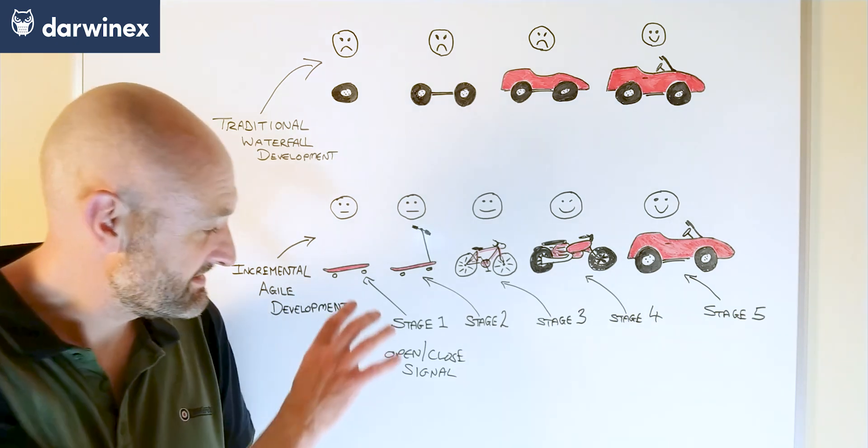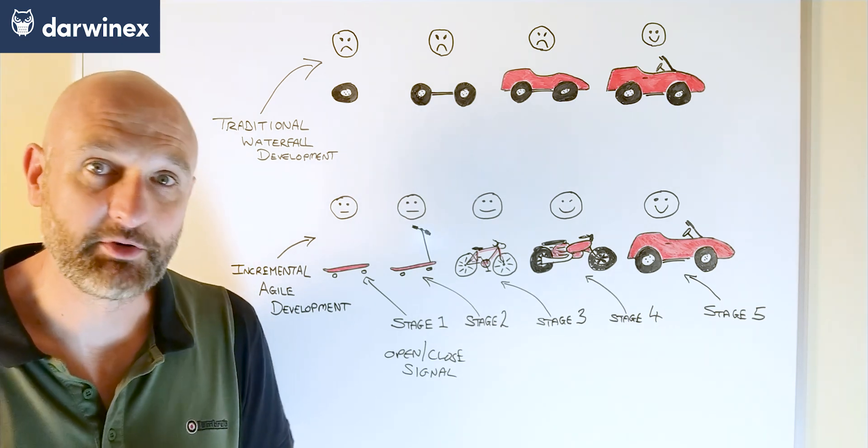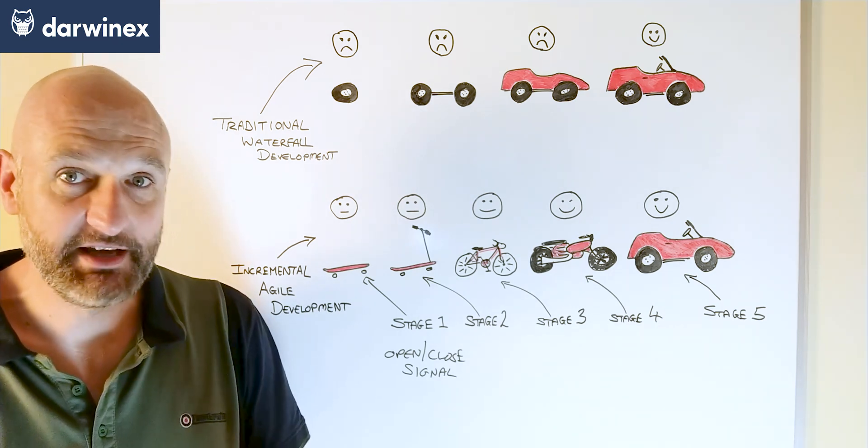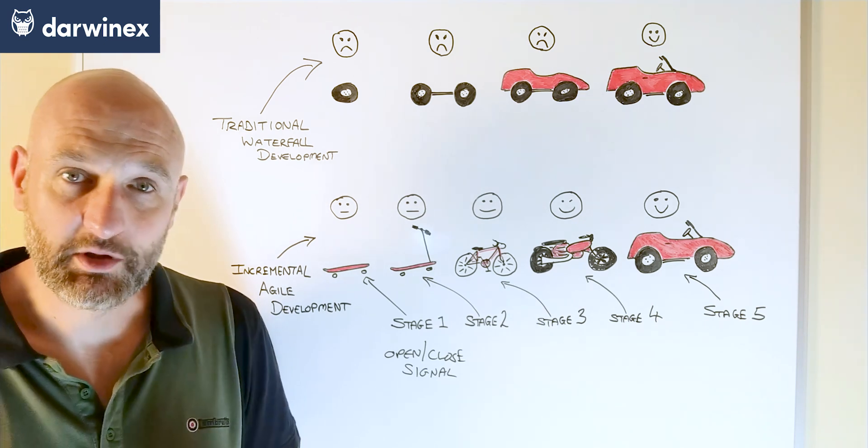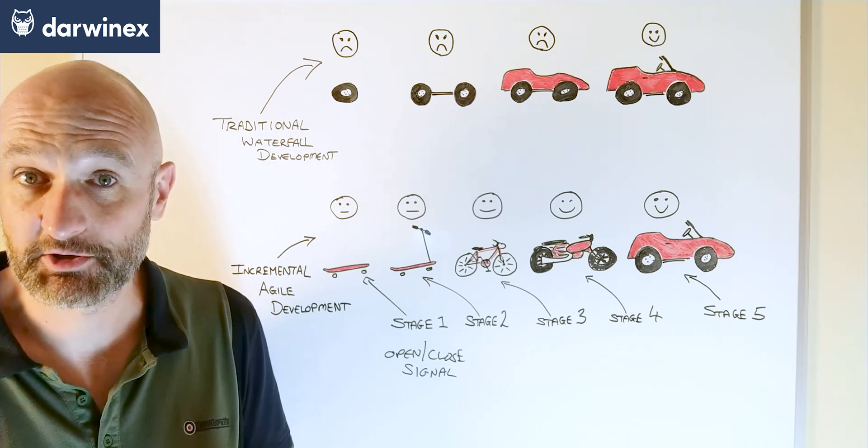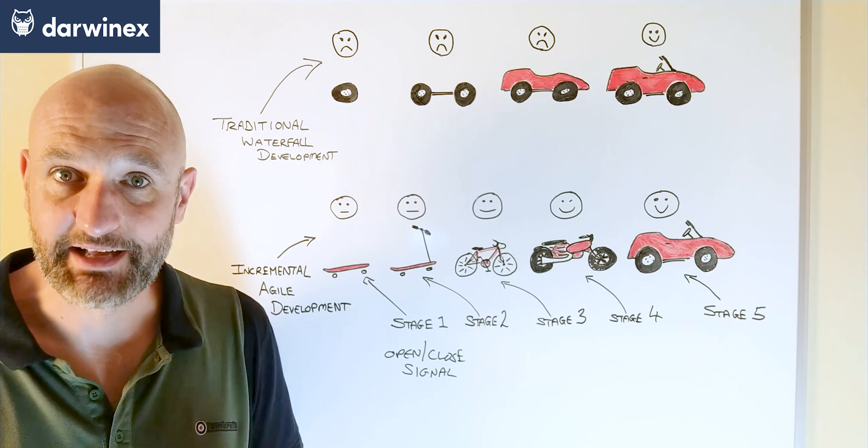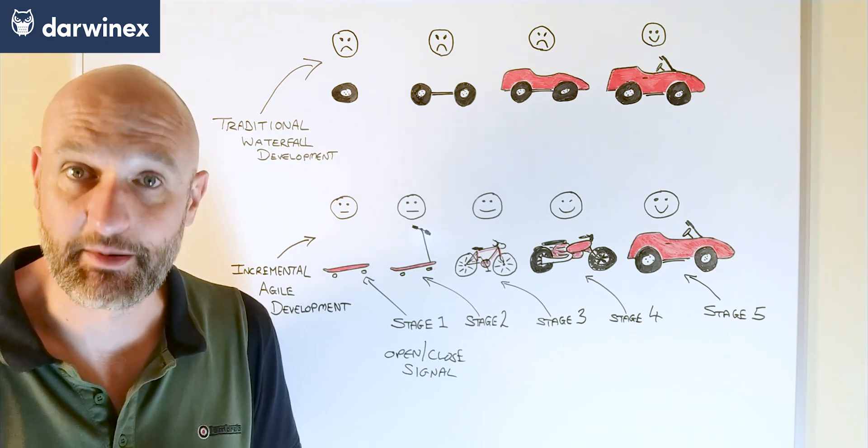And then I test these pieces of functionality using a simple backtest and using default parameter values. So this isn't an optimization, all I'm interested in right now is whether the signal is working correctly or not. So I use parameter values that make logical sense based on whatever the system premise is.